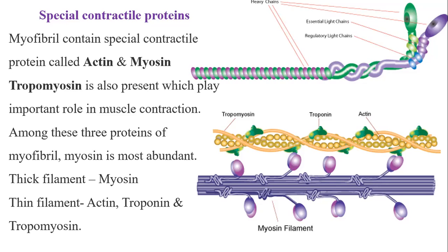These various proteins have an important role in muscle contraction. One thin filament probably contains 300 to 400 actin molecules, which are globular. In the diagram, this chain represents the thin filament and the other represents the thick filament.